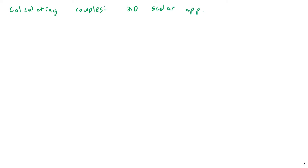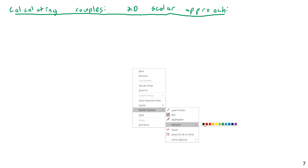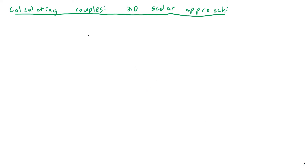You can use the scalar approach with 3D, but generally it's going to be such a pain to work through all the trigonometry that you're a lot better off nine times out of ten just working through the cross-products, like with a lot of moment-type things. So let's first talk about the simple case: the 2D scalar approach.